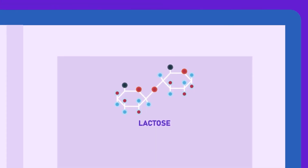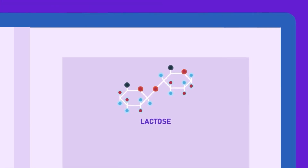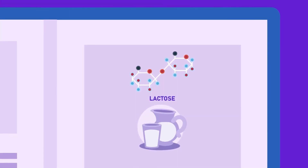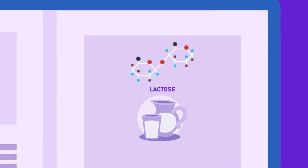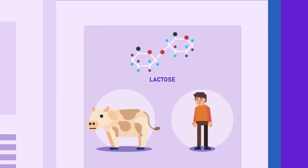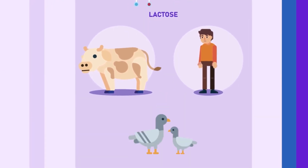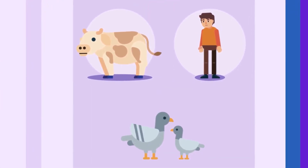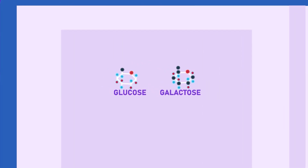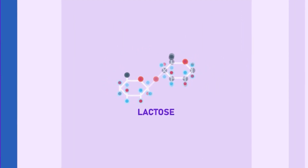Lactose, also known as milk sugar, is commonly found in milk, as the name suggests. It is found in milk of all mammals, including humans, and even in some similar fluids, such as pigeon's milk. It is formed from glucose and galactose combined together.